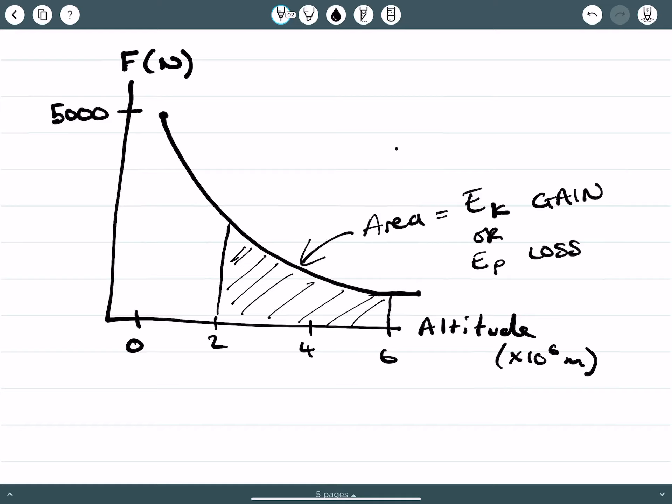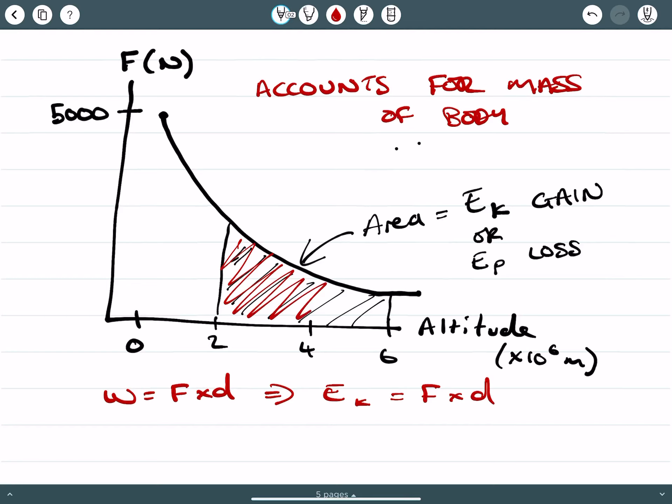And this actually is EK gain or EP loss. And there's no need for us to do any calculation in terms of kilogram. This type of graph accounts for mass of body. So you can do a straight energy calculation because you know that work equals force by distance, which is EK equals force by distance. And that's exactly what we're finding in this area. And you can just do the calculation without having to resolve it without any use of the mass of the body.